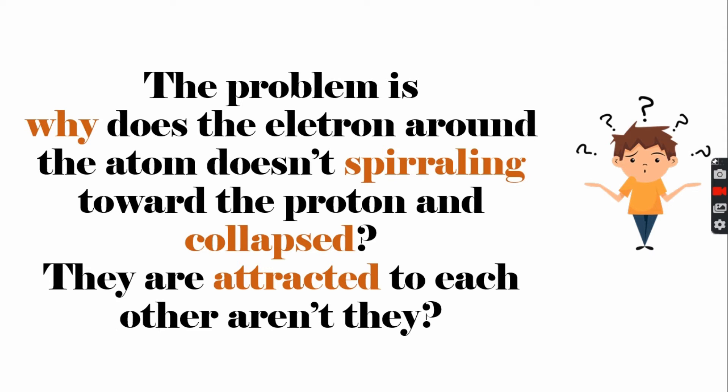But there was one major problem with the planetary model. It predicted that orbiting electrons would lose energy in the form of radiation, which would make them spiral inward and eventually crash into the nucleus. This implies that all atoms would eventually collapse, and that's not true. So something is missing.